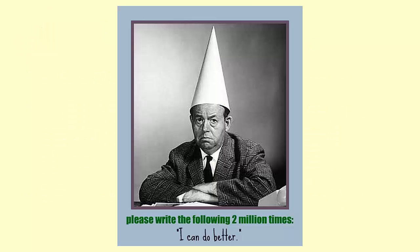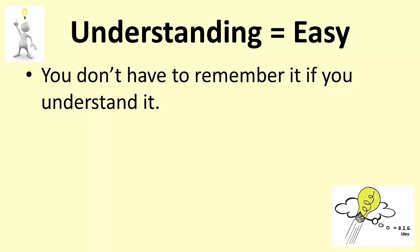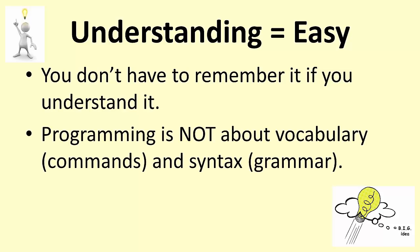Understanding is easy. You don't have to remember something if you understand it. You may need to look up the exact terminology, but at least you know you need a one of those. Programming is not about vocabulary, the commands that you need to write a language. And it isn't about the syntax, the grammar of writing in a particular language. Programming is all about logic. How do I break this problem down into steps that a computer will understand?